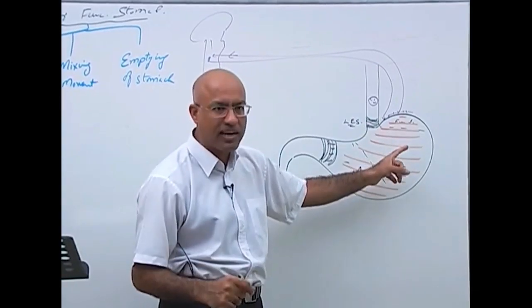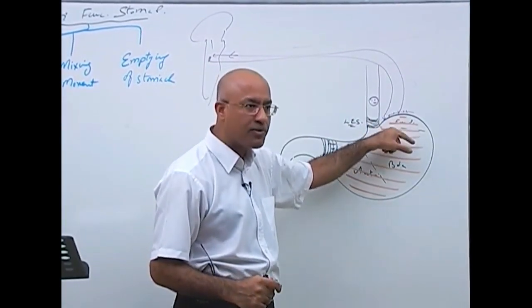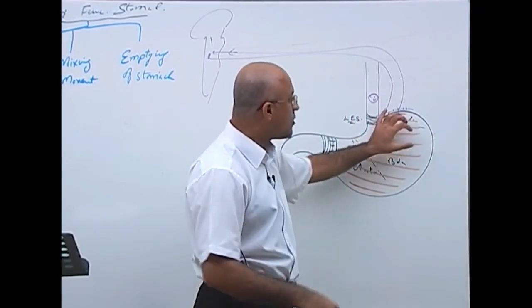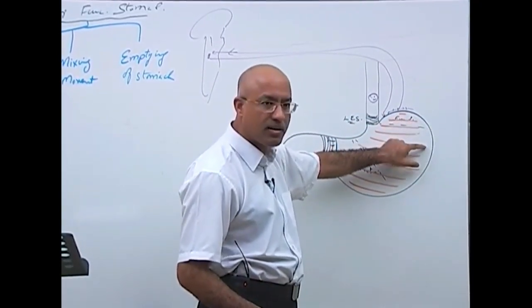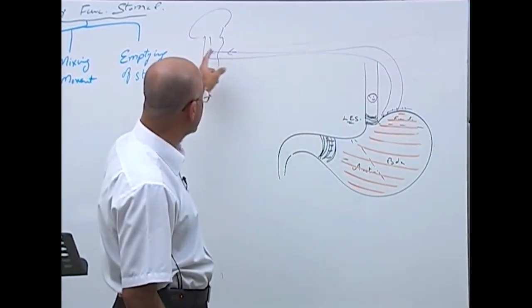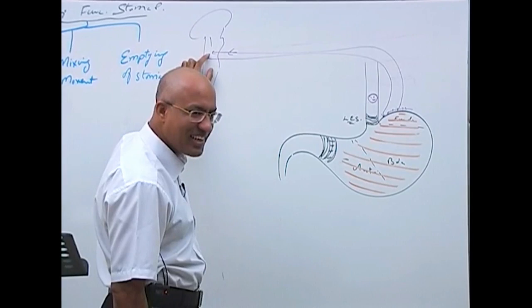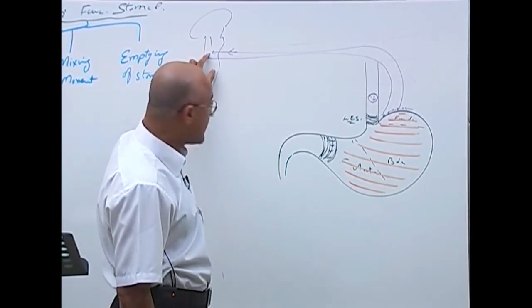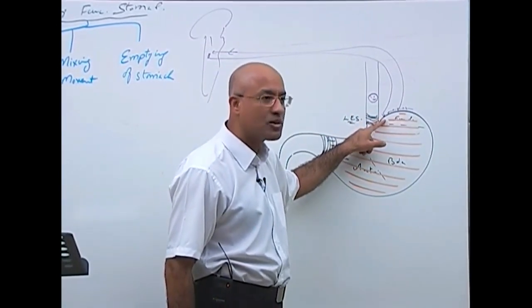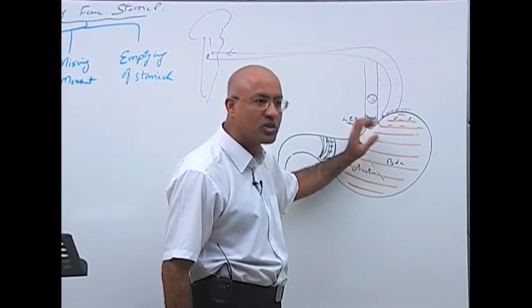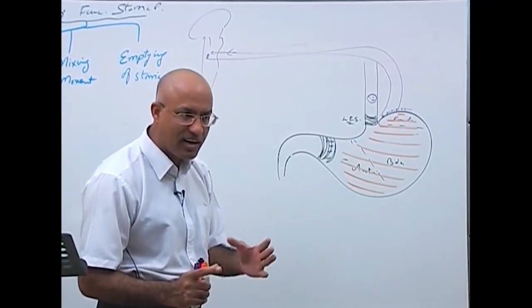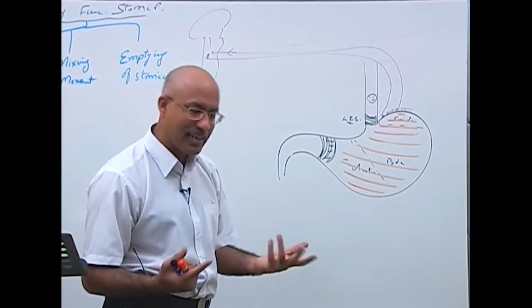Accommodative relaxation is not a local reflex — it is a vago-vagal reflex. The stretch on the stomach wall produces action potentials in sensory fibers of the vagus nerve, which carry information to the medulla. From there, parasympathetic motor fibers return and relax the stomach smooth muscle. This is called accommodative relaxation.